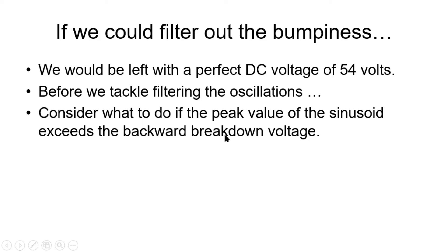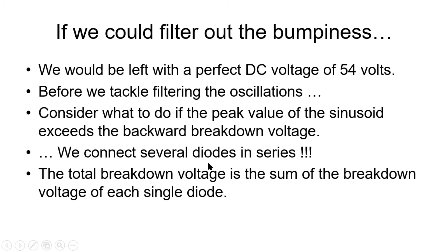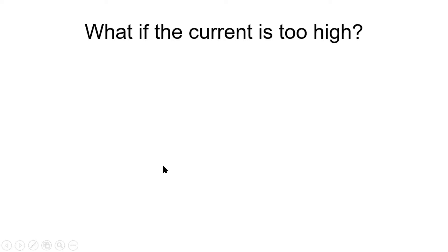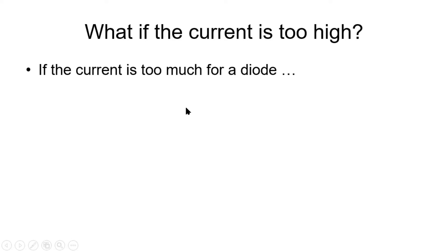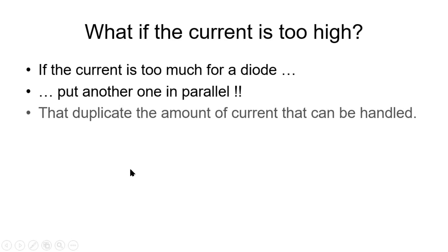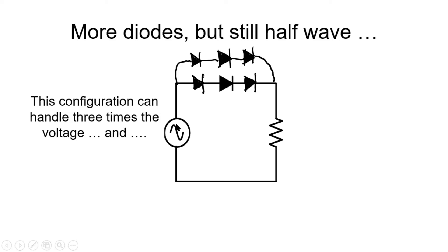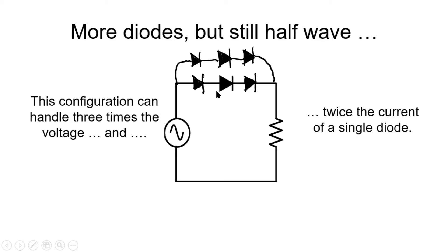If the peak voltage is way more than the reverse breakdown voltage of the diode, we connect several diodes in series. That way the total breakdown voltage is the sum of the individual breakdown voltages. For example, three identical diodes in series can handle three times more voltage than a single diode. On the other hand, if the current is too high, we connect more diodes in parallel — that duplicates the amount of current that can be handled. A setup with three diodes in series and two in parallel handles three times the voltage and twice the current of a single diode. These configurations are very common in industry.